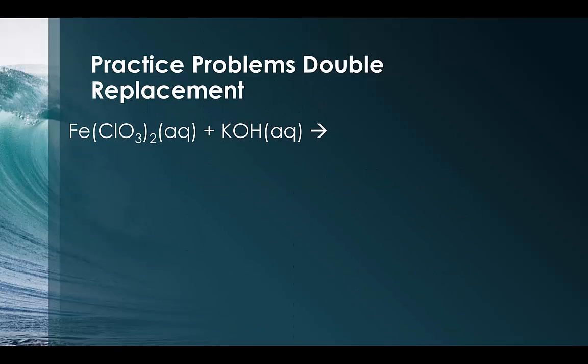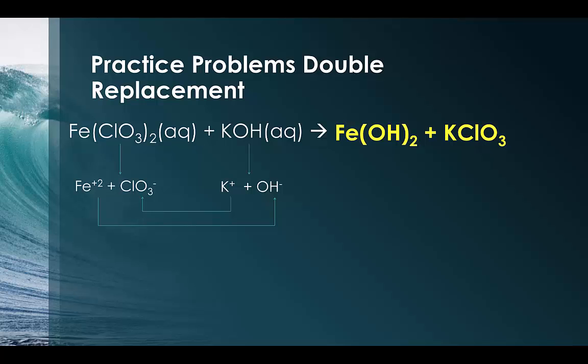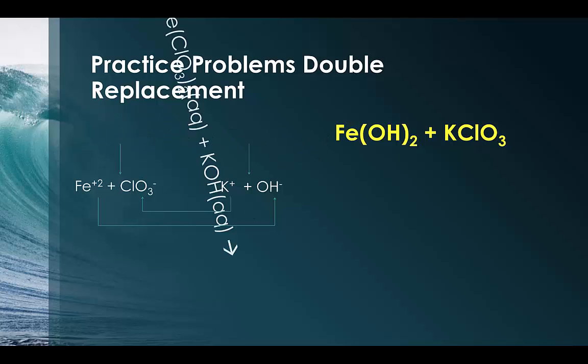So now let's try this problem. We have iron(II) chlorate, and it's being mixed with potassium hydroxide. So the first things we're noticing is that the iron is going to dissociate into an iron plus 2, and the chloride is a negative 1 charge, while the potassium gives you a positive charge, and the hydroxide gives you a negative 1 charge. Again, the metals are going to be swapping places, and you should notice that you're going to then produce a final compound of iron(II) hydroxide and potassium chlorate. Again, it does not matter if you write them first or second, or in whatever order. As long as you get them correct, that is all what matters.